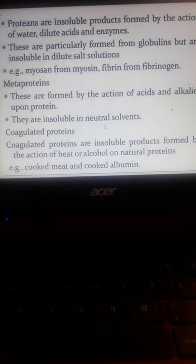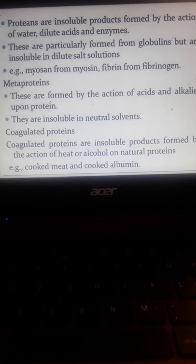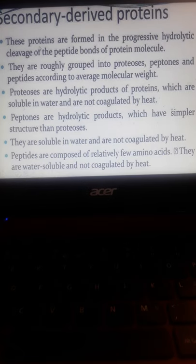Coagulated proteins are insoluble in neutral solvents. What are the neutral solvents? Of course we have water and blood. Coagulated proteins are insoluble products formed by the actions of heat or alcohol on natural proteins. If you add the acids and you coagulate the egg or coagulate the lean meat, the tendency is there are insoluble products that are formed, like cooked meat or even the cooked albumins in the egg. The white part of the egg is the source of the protein.